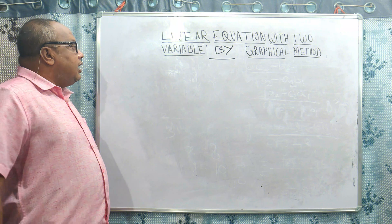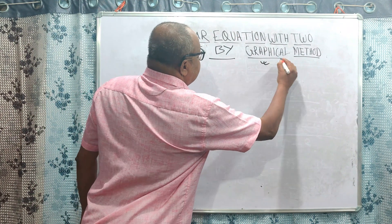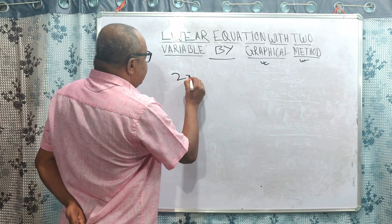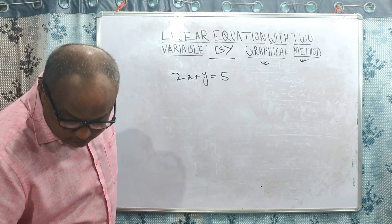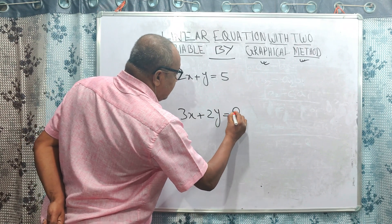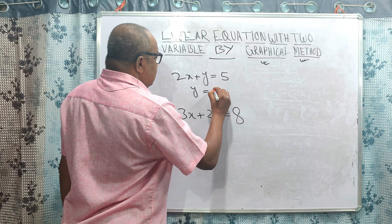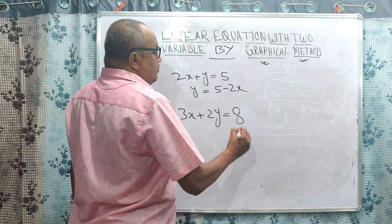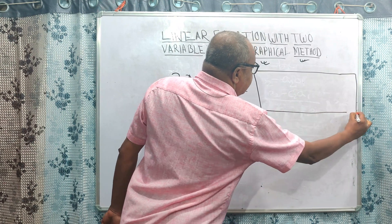This is the solution. Now I am going to explain about the linear equation with two variables by the graphical method. This is a very simple method. Let us consider the equation 2x plus y is equal to 5. The second equation is 3x plus 2y is equal to 8. From the first equation, y is equal to 5 minus 2x. We are plotting a graph by taking variable values of x and y.